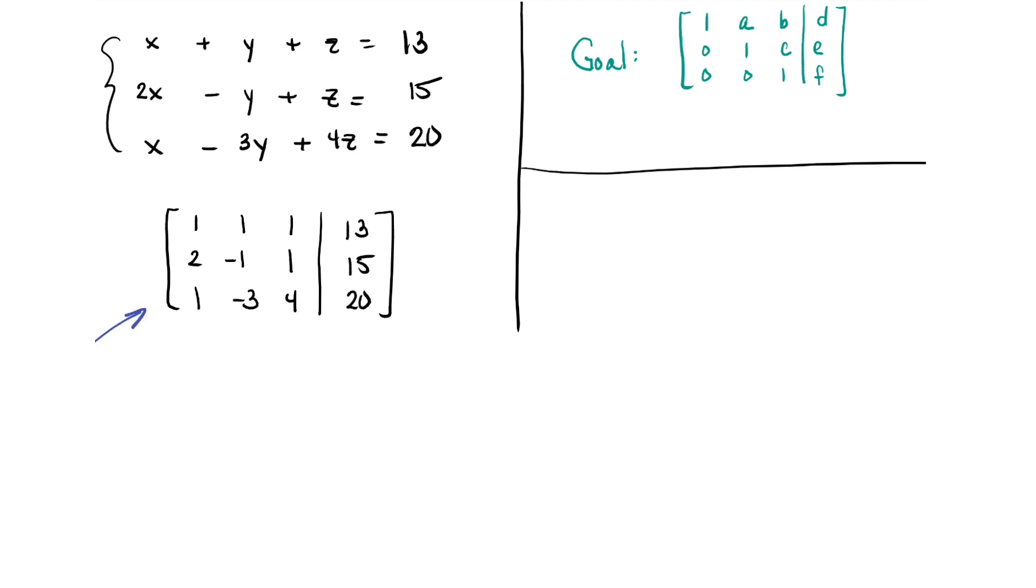And the goal for Gaussian elimination is to have the augmented matrix through row operations have the form 1s on the main diagonal, 0s below the 1s, and all the other numbers could end up being anything. We stop once we have the 1s and 0s where we want them. So first thing we look for is that 1 in the upper left hand corner and it's there.